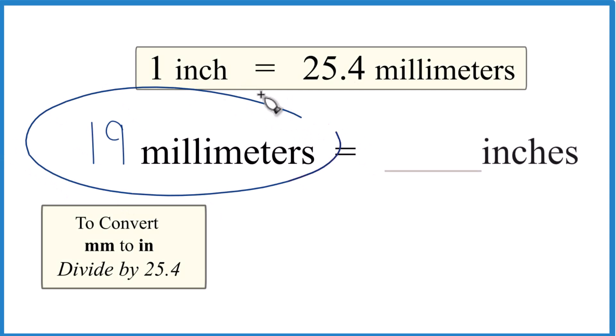Let's convert 19 millimeters to inches. How do we get from 19 millimeters to inches? We know that one inch equals 25.4 millimeters. So 19 is less than 25.4, so we should end up with less than one inch. Always good to estimate.